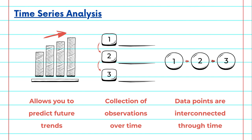Time series data is a collection of observations taken at different points in time. It can be hourly stock prices, daily temperature measurements, or monthly sales figures — any data where time is a crucial factor.